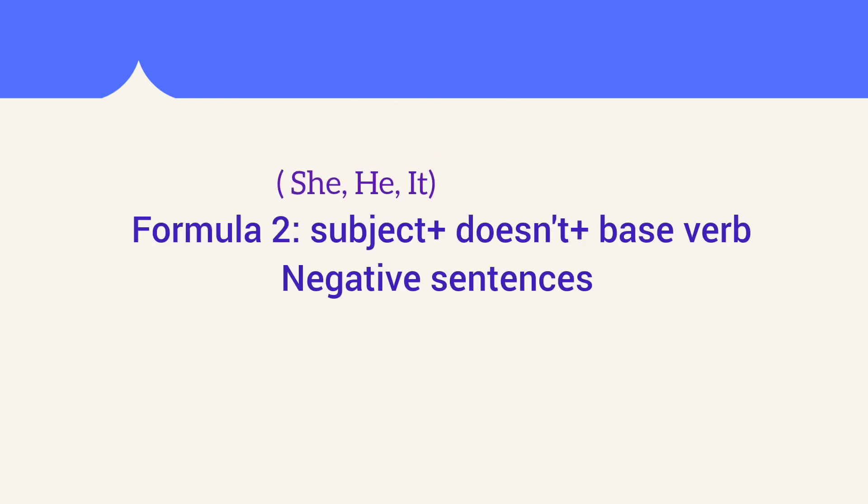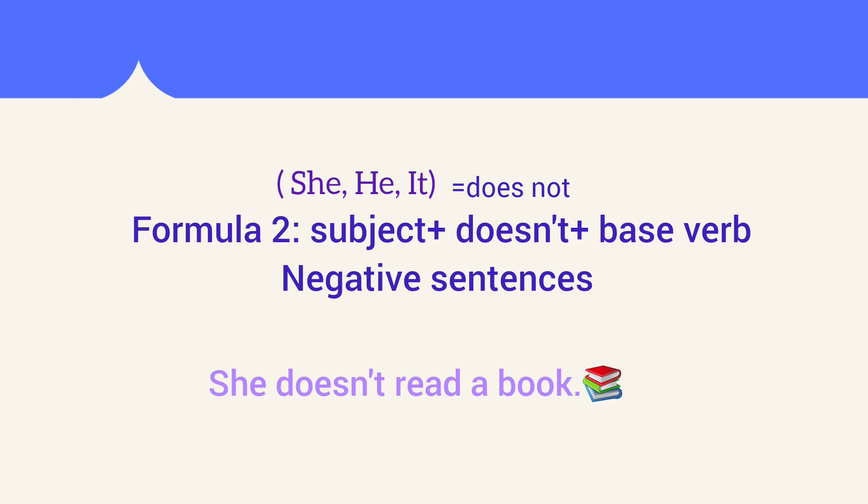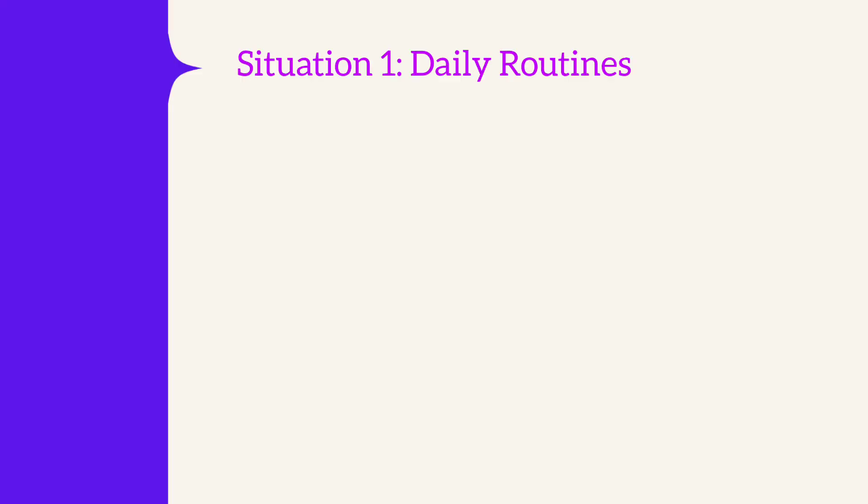Formula 2: Negative sentences. Subject: she, he, it — plus doesn't plus base verb. For example: she doesn't read a book.